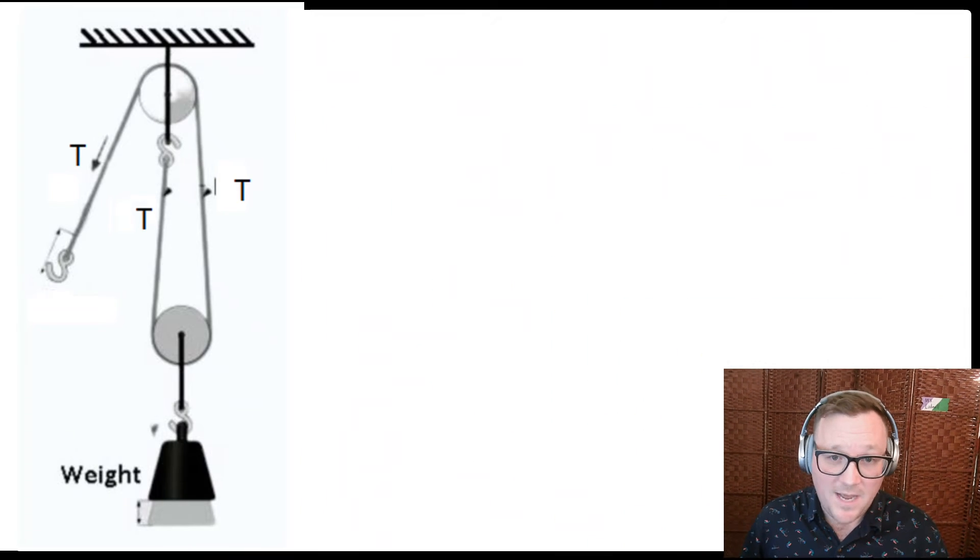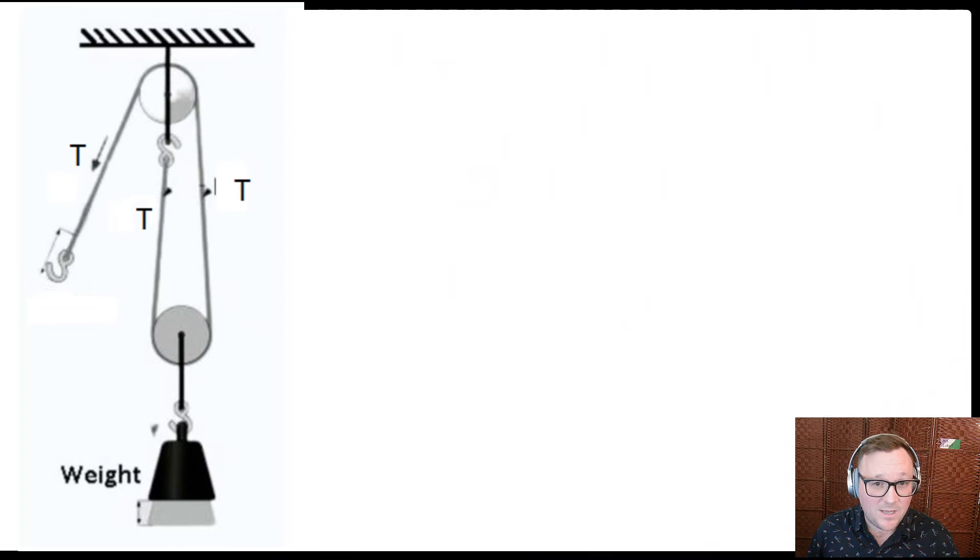What about that second part of our definition, though? We said pulleys are a simple machine. It has a wheel with a grooved rim around which a cord passes. It can be used to change the direction of force. Okay, we saw that. And it can be used to reduce the force required to raise heavy weights. So how could that work? Okay, well, one way to do that is to add a pulley at the bottom as well, like in this setup.